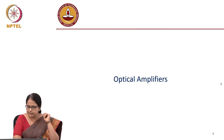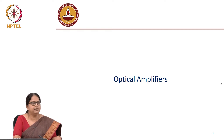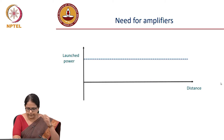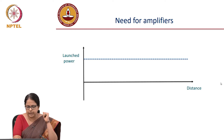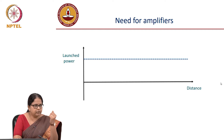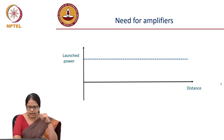We now move on to our next topic which is optical amplifiers. The first question we are asking ourselves is why do we need optical amplifiers? Consider a link map where the y-axis is power and the x-axis is distance. The blue dotted line marks the largest power that you can launch into the fiber. When you launch a certain power, the fiber has its attenuation, and because of that attenuation the power starts falling as a function of distance.